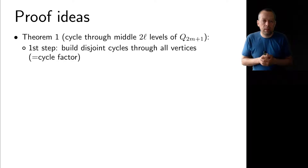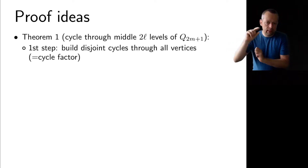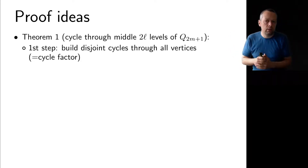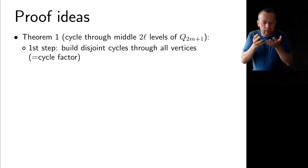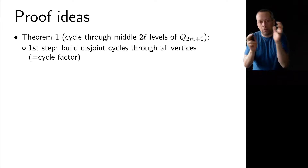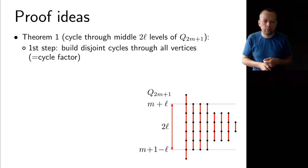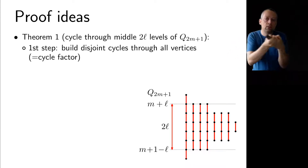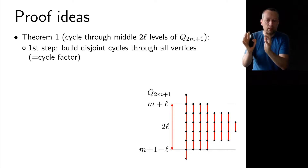Let me talk about the main ideas in proving these two theorems, starting with Theorem 1: a Hamilton cycle through the middle 2l levels of the cube of odd dimension. This is a constructive proof that proceeds in two steps. In the first step we build a collection of disjoint cycles through all vertices of the graph — a cycle factor. We do not immediately aim for one cycle; for now we just aim for many disjoint cycles. This is exactly where SCDs enter the picture.